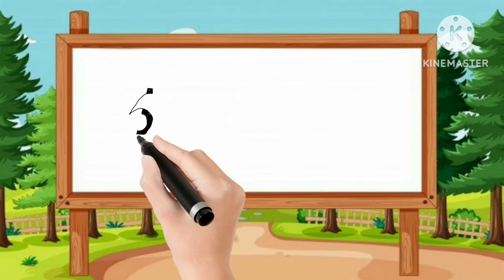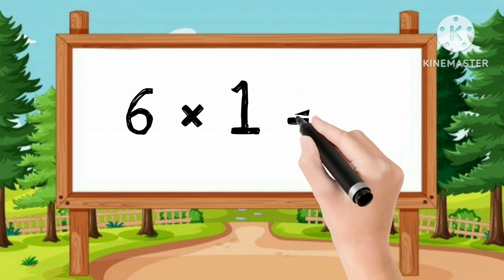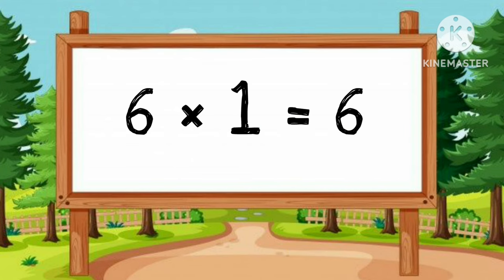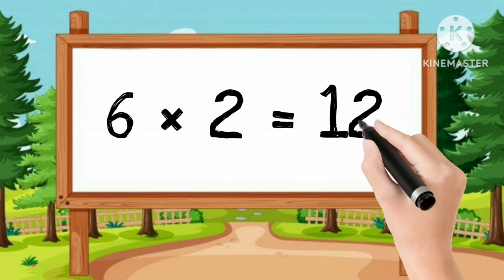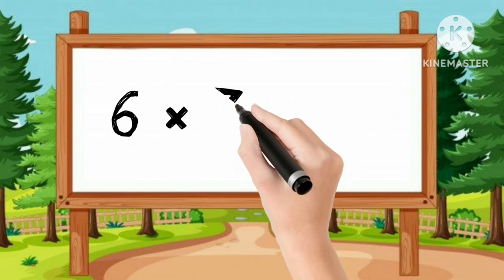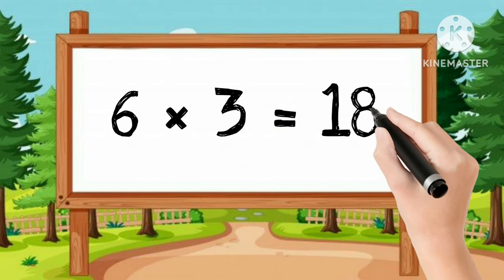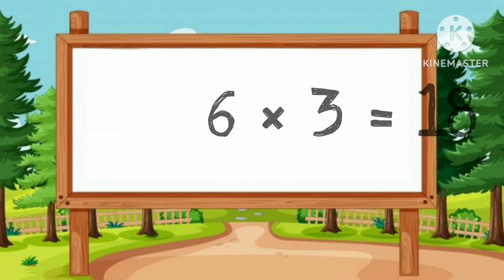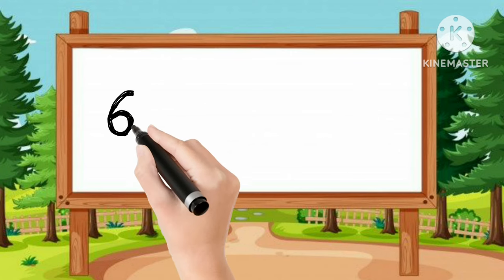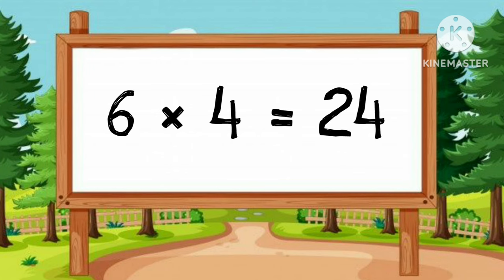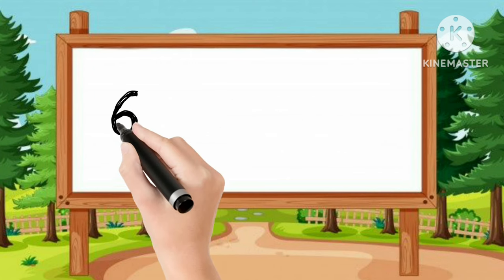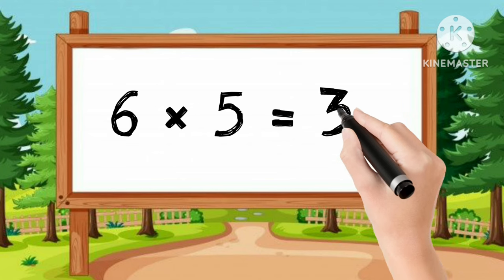We will learn table of 6. 6-1s are 6. 6-2s are 12. 6-3s are 18. 6-4s are 24. 6-5s are 30.